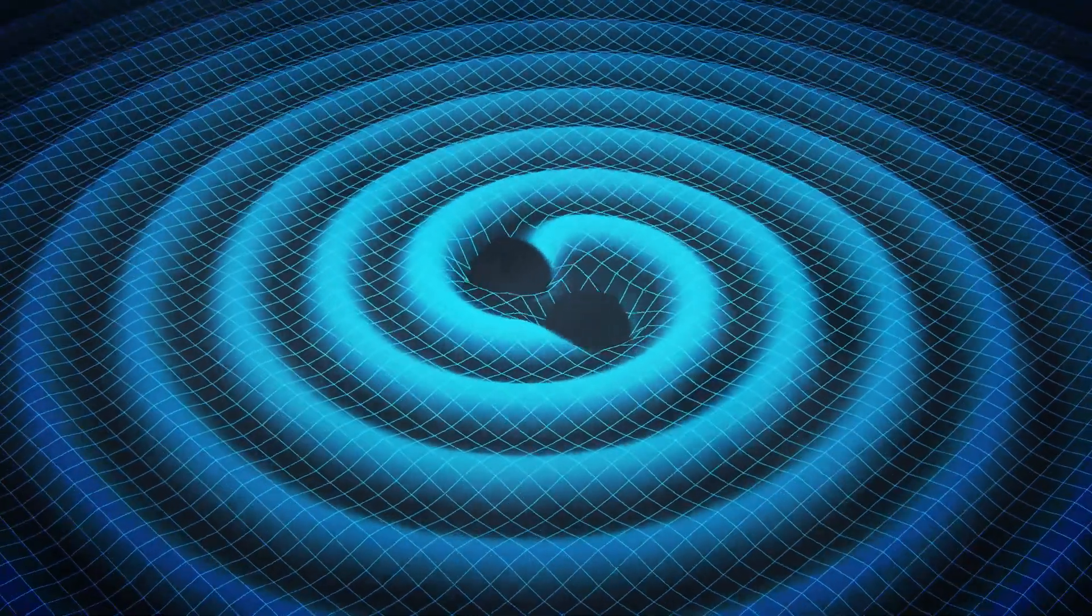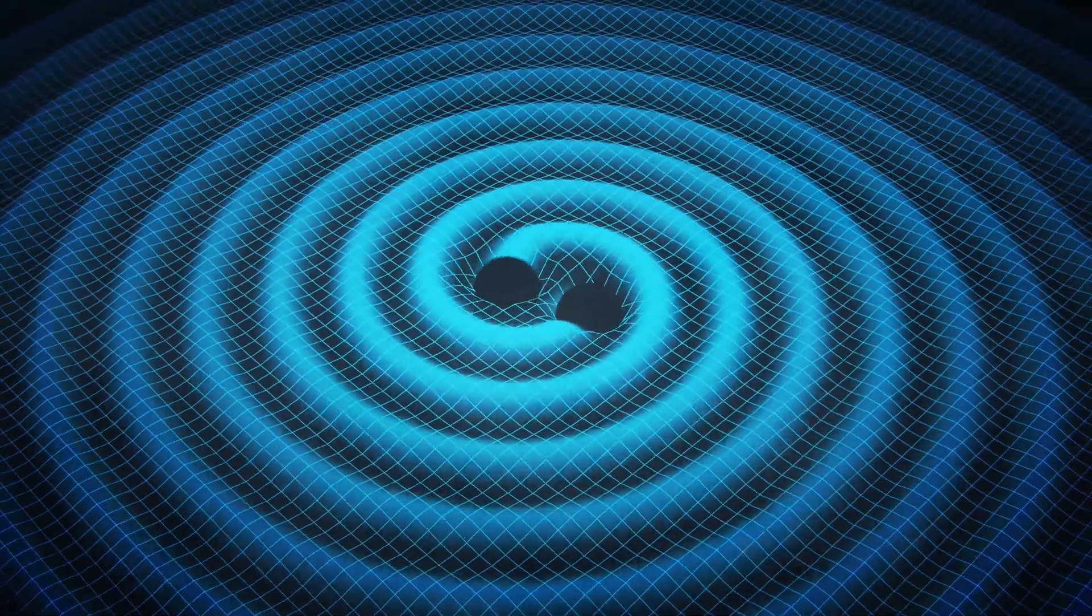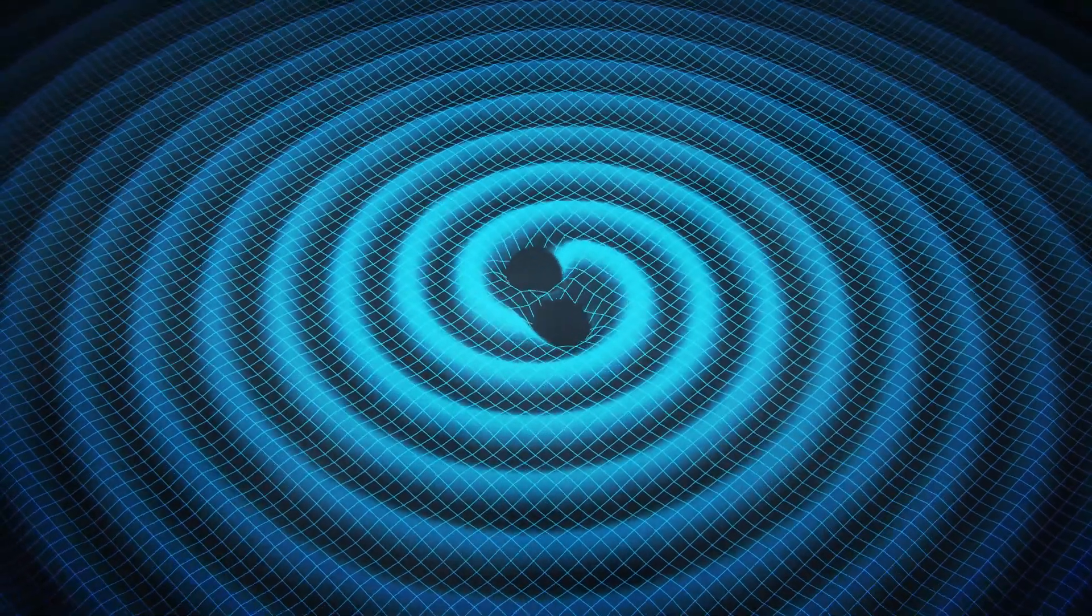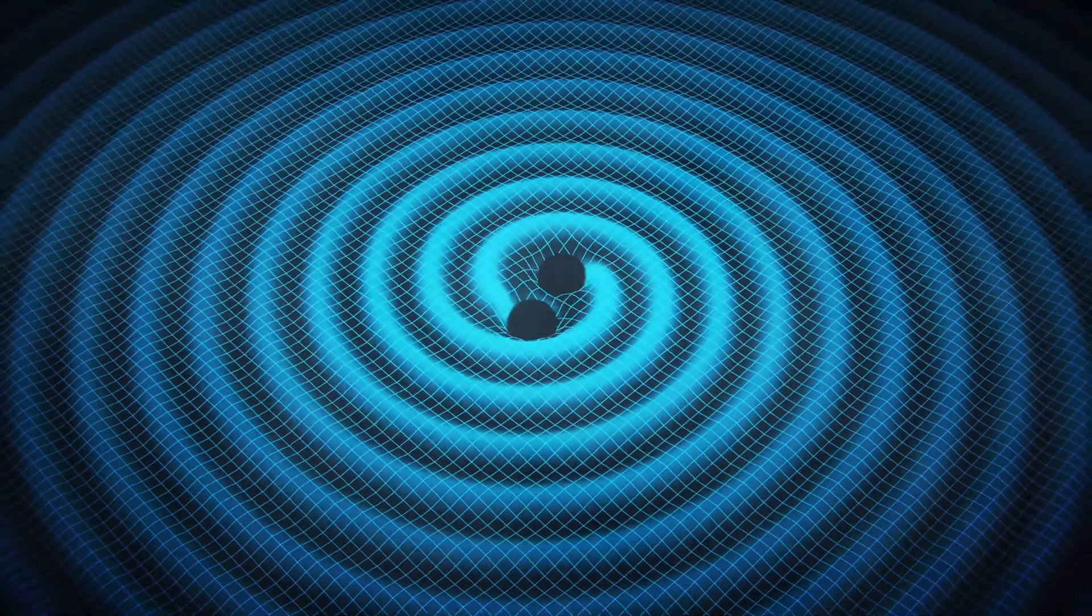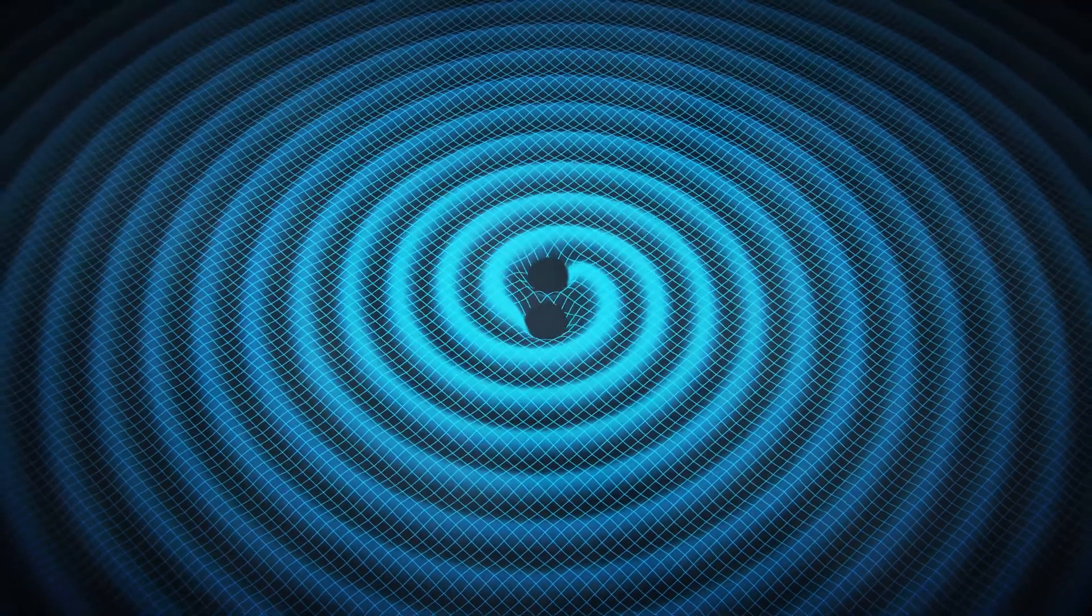A key prediction of Einstein's general theory of relativity is that pairs of black holes cause travelling ripples in the structure of space itself, known as gravitational waves.